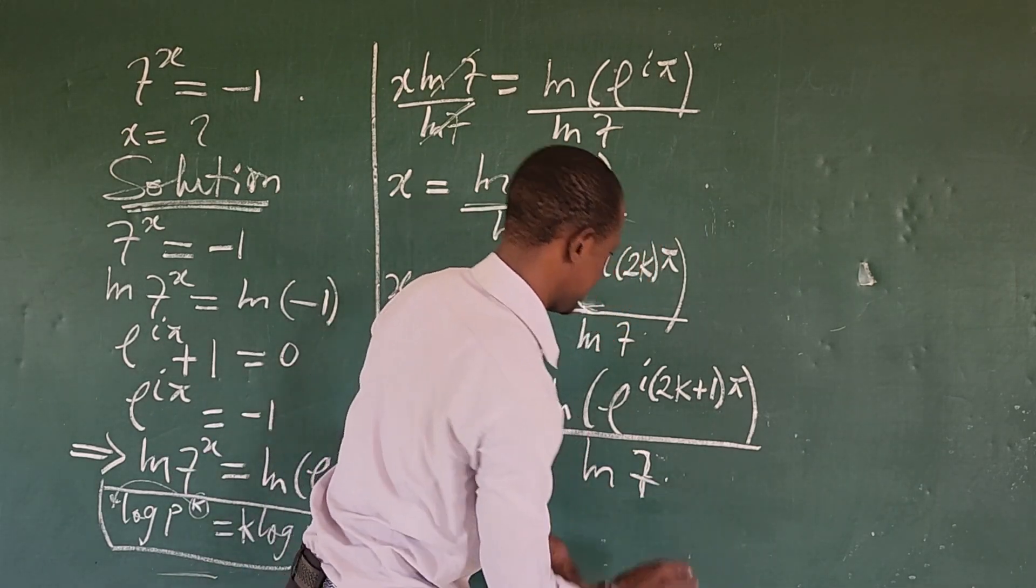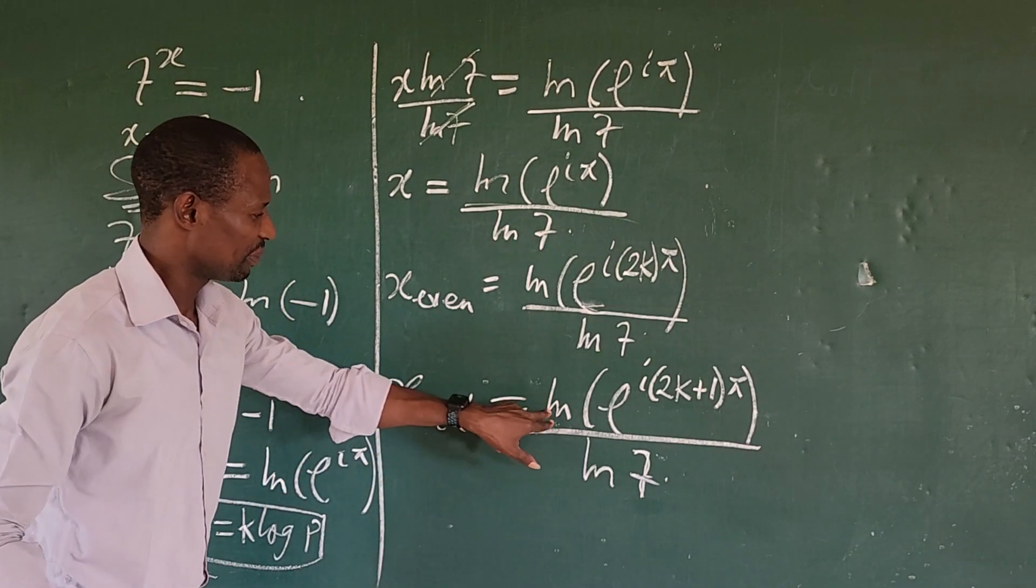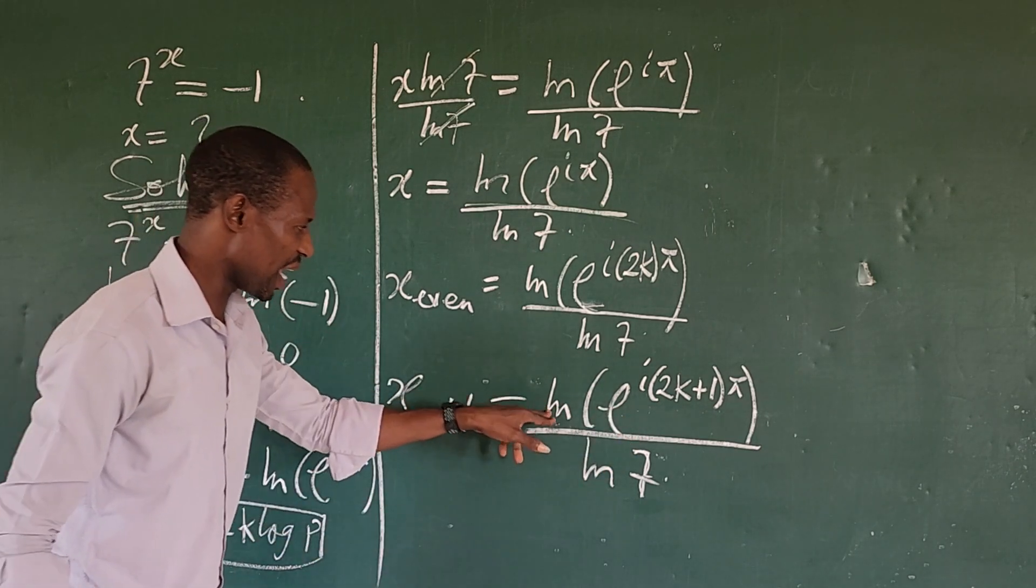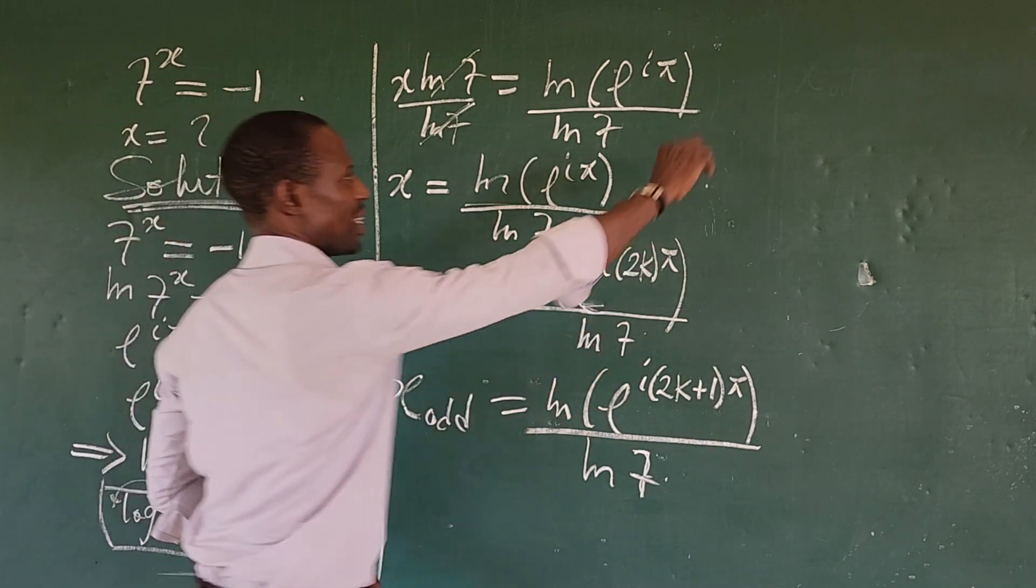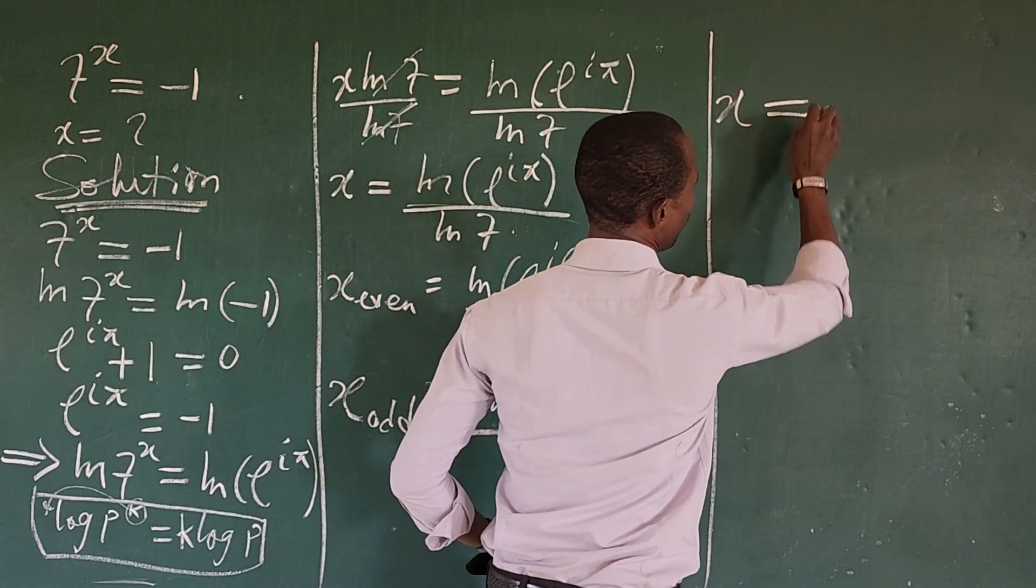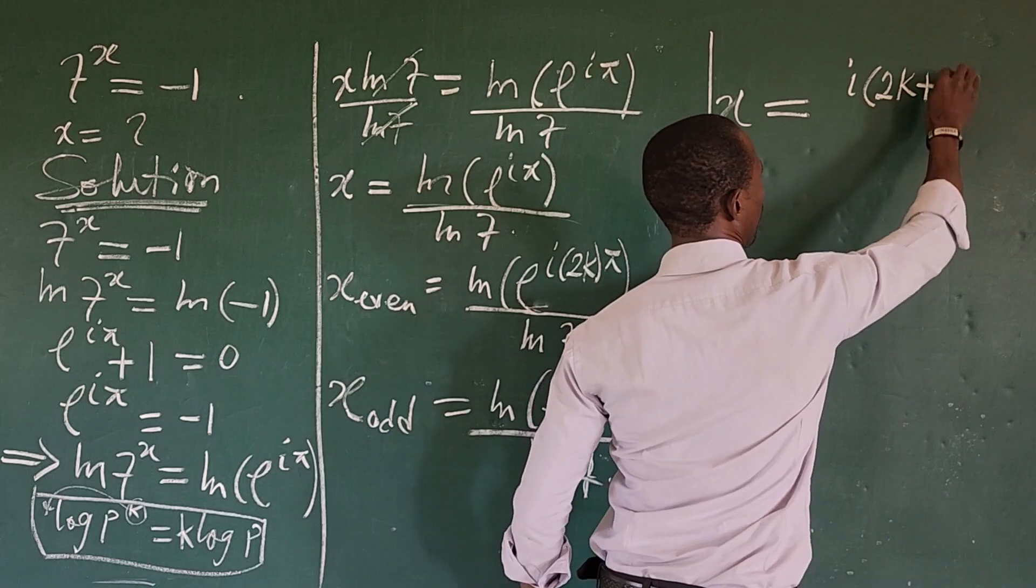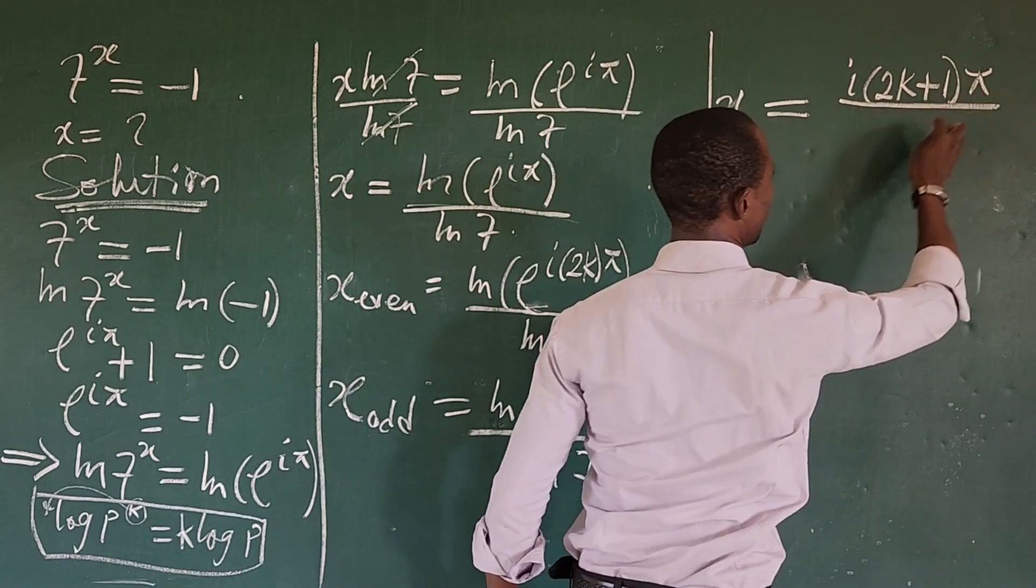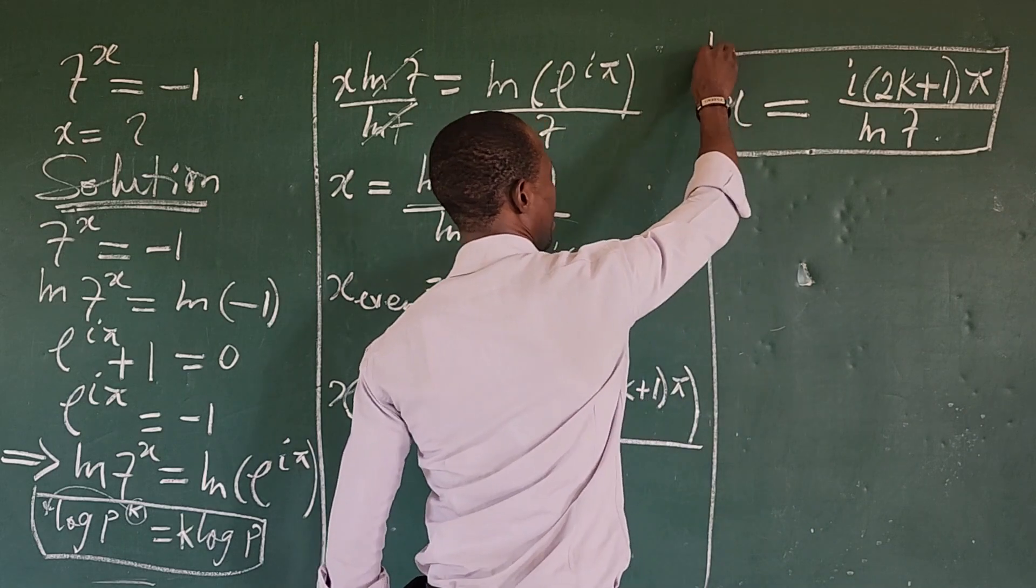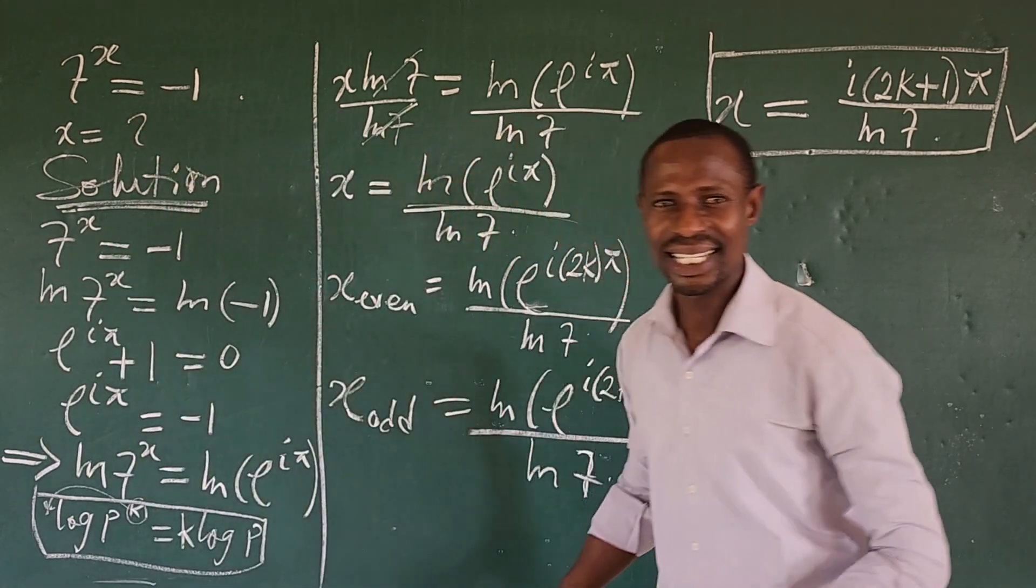Alright, this ln of 7. Easy. So now, if you look at it, ln will cancel this E. So if ln will cancel this E, what will now be our final answer? So let's look at our final answer here. So from here, we're going to have our x is equal to iota times (2k plus 1) pi, all over ln of 7. So this is the value of our x. This is the value of x that will satisfy this exponential equation.